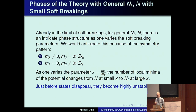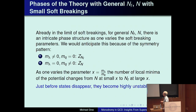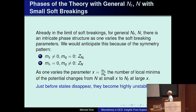A case where we can explore this without hand-waving is the theory with general N_F and N with small soft breakings. Already in the limit of soft breakings for general N_F and N, there is an intricate phase structure. For m_lambda not zero and mq equals zero, this theory has a Z_{N_F} symmetry. For m_lambda equals zero and mq not zero, the symmetry is Z_N. As one varies the parameter x, which is m_lambda over mq with both small, the number of vacua — local minima of the potential — changes from N at small x to N_F at large x.